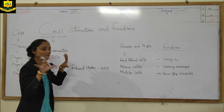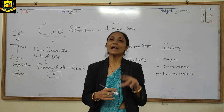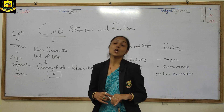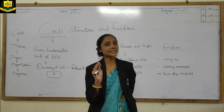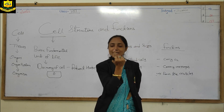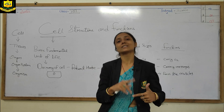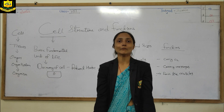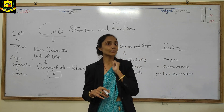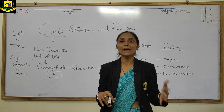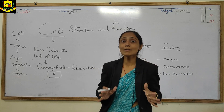In our world there are two types of organisms. The first is unicellular and the second is multicellular. Unicellular means a single-cell organism — an organism made up of only one cell. Multicellular is a complex organism made up of many cells; for example, human beings. Examples of unicellular organisms are amoeba, leishmania, and paramecium.